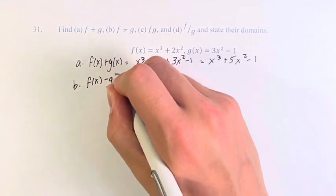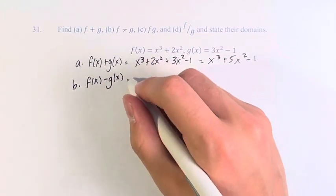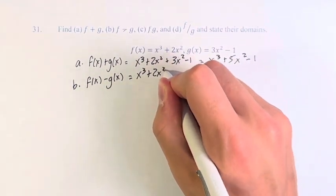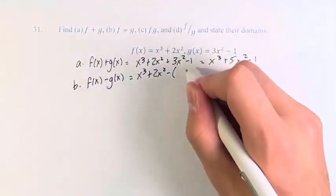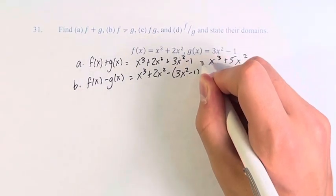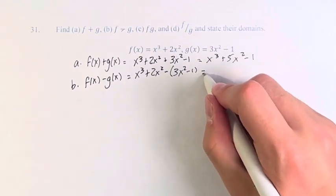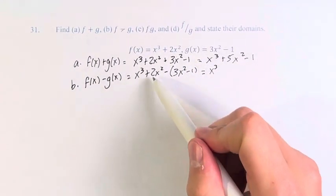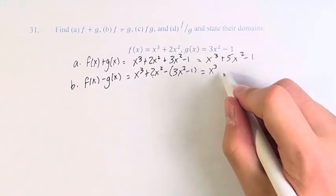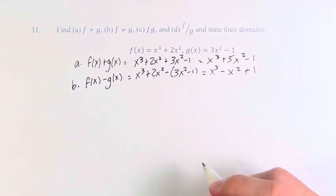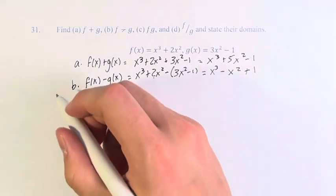Next, we have f of x minus g of x. So this is f of x, x cubed plus 2x squared minus g of x, 3x squared minus 1. And make sure it's in parentheses because we're subtracting the whole thing. So this is x cubed plus 2x squared minus 3x squared is minus 1x squared. Minus negative 1 is plus 1. So x cubed minus x squared plus 1.